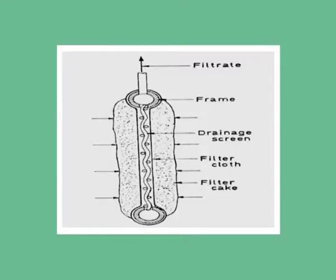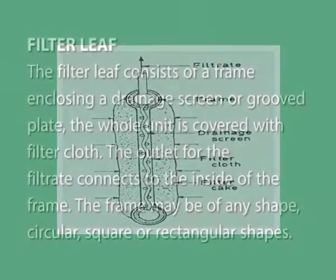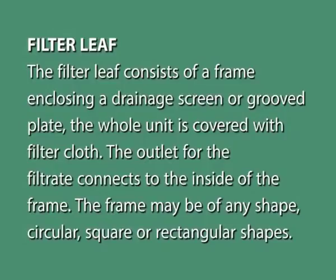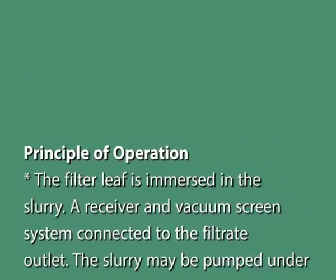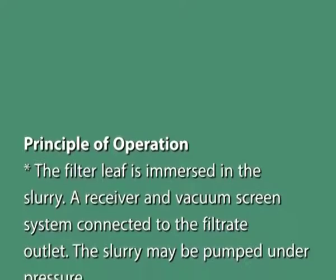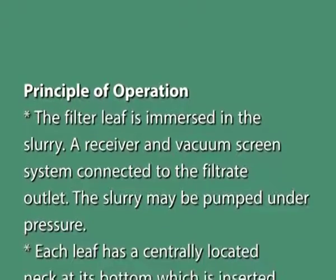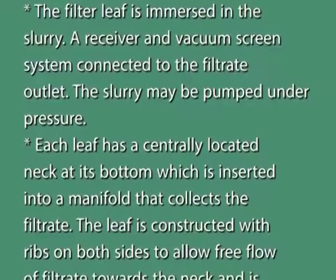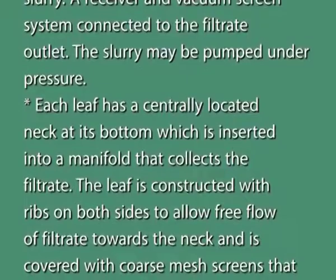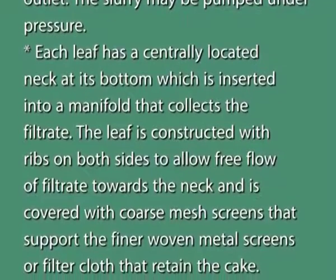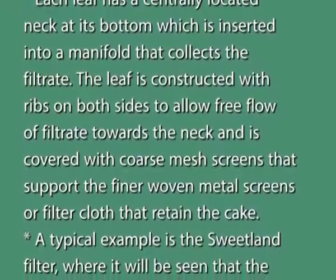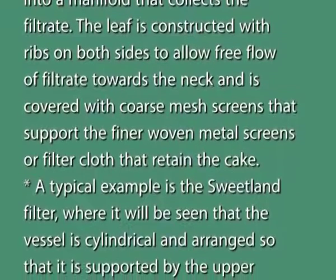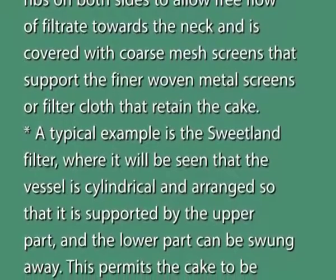The filter leaf consists of a frame enclosing a drainage screen or grooved plate, with the whole unit covered with filter cloth. The outlet for the filtrate connects to the inside of the frame, and the frame may be of any shape: circular, square or rectangular. In operation, the filter leaf is immersed in the slurry with a receiver and vacuum screen system connected to the filtrate outlet. Each leaf has a centrally located neck at its bottom inserted into a manifold that collects the filtrate. The leaf is constructed with ribs on both sides to allow free flow of filtrate towards the neck and is covered with coarse mesh screens that support the finer woven metal screens or filter cloth that restrain the cake.